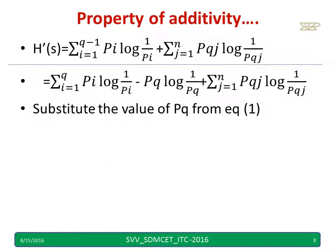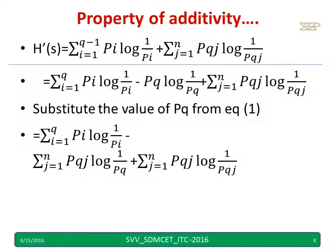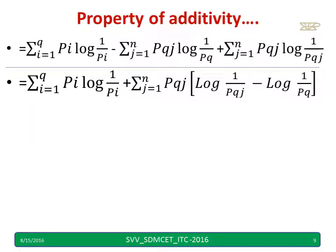Substituting the value of pq from equation one into the above equation we get the next expression. What I have done is simply substituted the value of pq. Then I take the summation j=1 to n as common, and pqj is also common between the two terms. Using log formulas I can simplify it — the minus term I have taken inside.